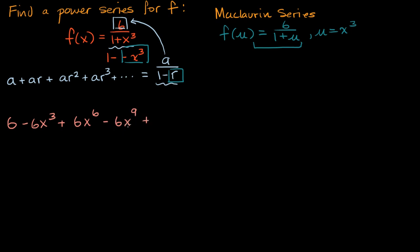And I'm going to go on and on. I multiply times -x³, I will get 6x¹². And we can go on and on and on forever.